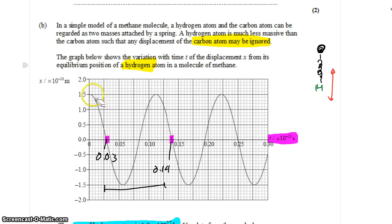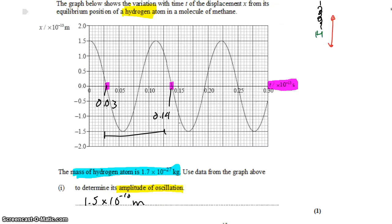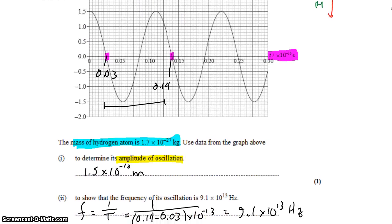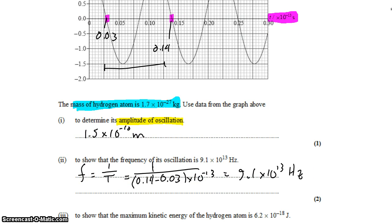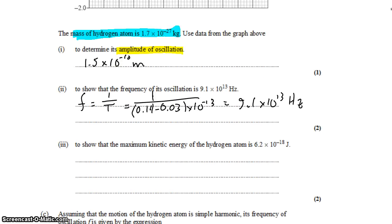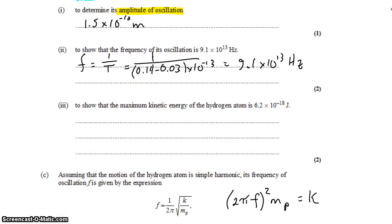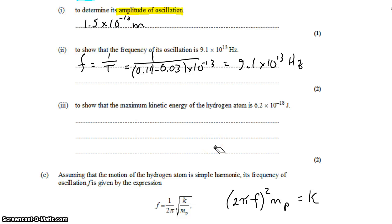We're still talking about the hydrogen atom oscillating up and down as a spring oscillator, and we found the amplitude of oscillation as well as the frequency of oscillation. The part that I skipped was to find the maximum kinetic energy of the hydrogen atom, show that it's 6.2 times 10 to the negative 18 joules.